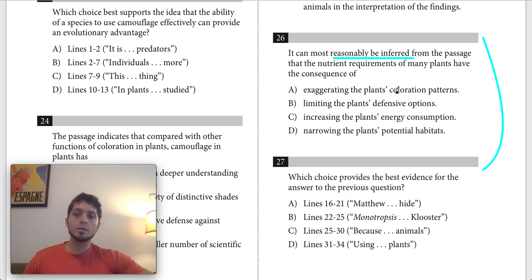It can most reasonably be inferred from the passage that the nutrient requirements of many plants have the consequence of something. So to solve this, we need to look through the answer choices for 27 and look for a text or line that's going to tell us about the nutrient requirements of many plants.